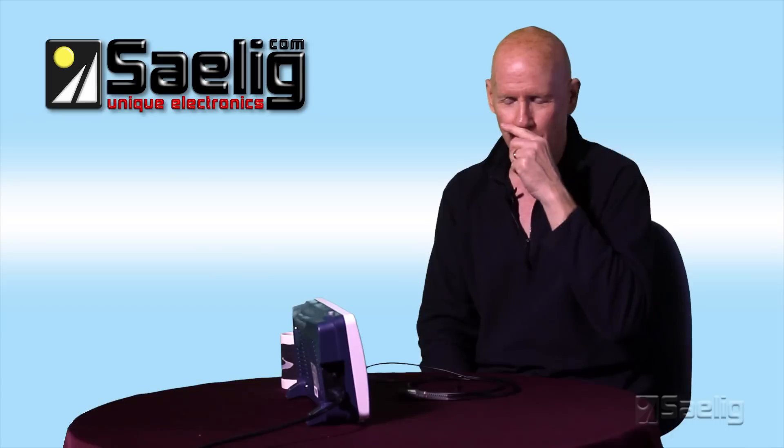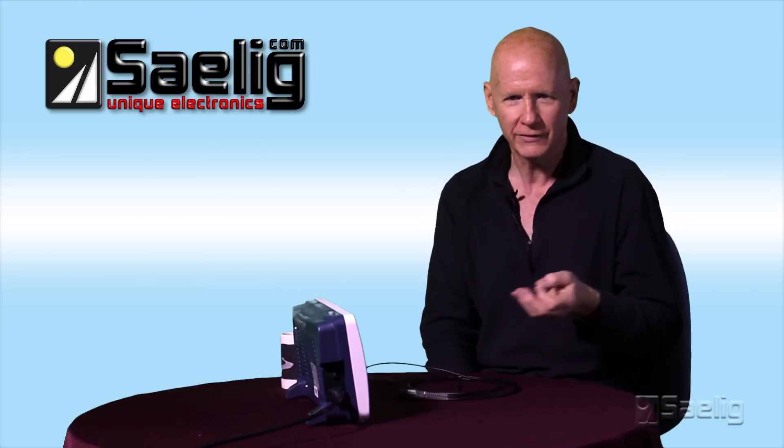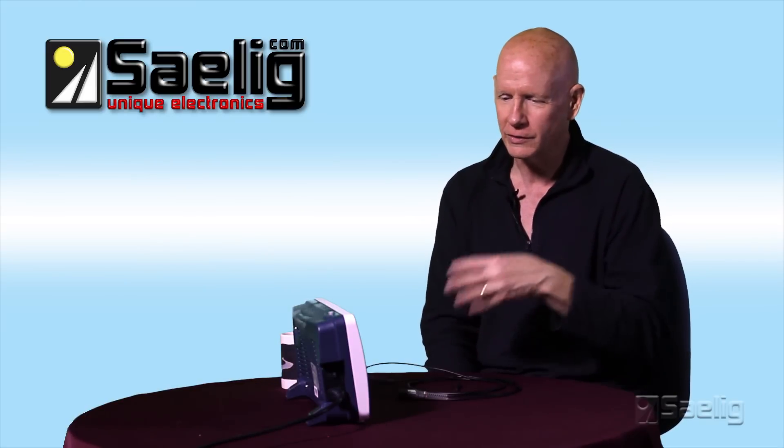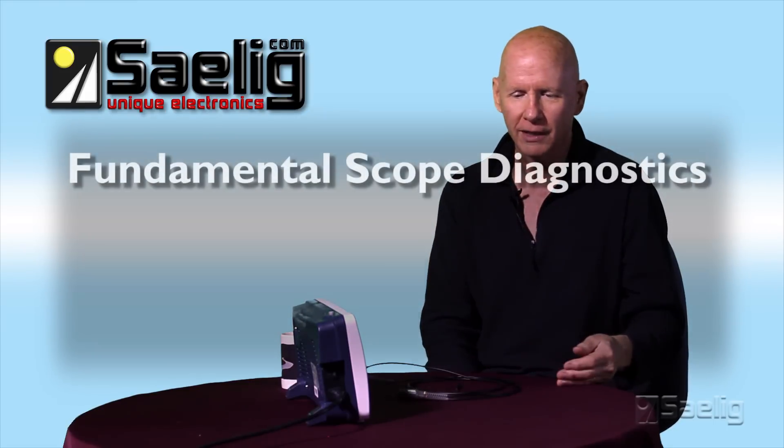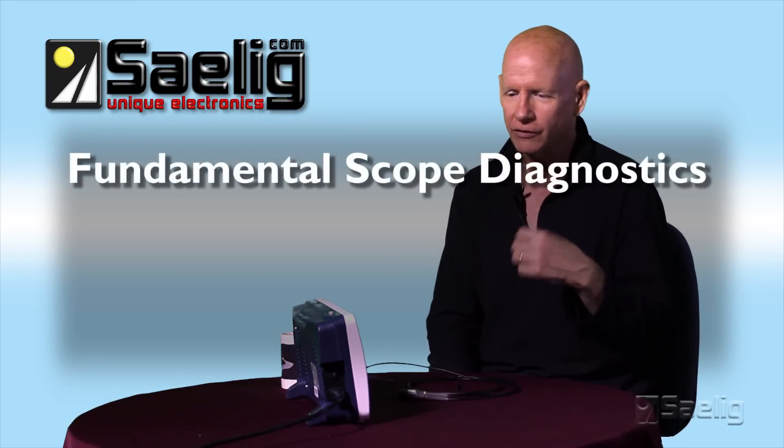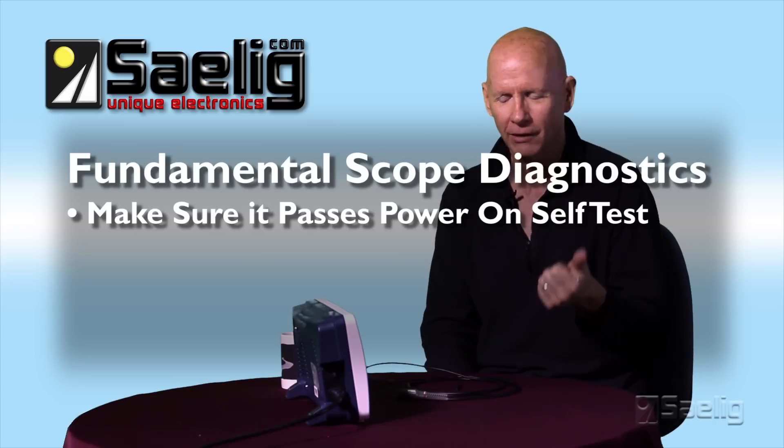But there's three things I want to talk to you about that you can use any time should you have or suspect you have any kind of a problem with what you're seeing on the scope. Is it real or not? Or is it my circuit? It's hard to know. But there is a way where you can step back and get back to ground zero. And the first way is to make sure the scope passes its power on self-test.